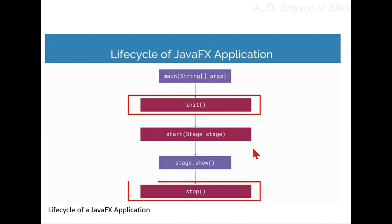Here, the public abstract void start(Stage primaryStage) method. This is the main entry point for all JavaFX applications. The start method is called after the init method has returned and after the system is ready for the application to begin running. Note that this method is called on the JavaFX application thread.